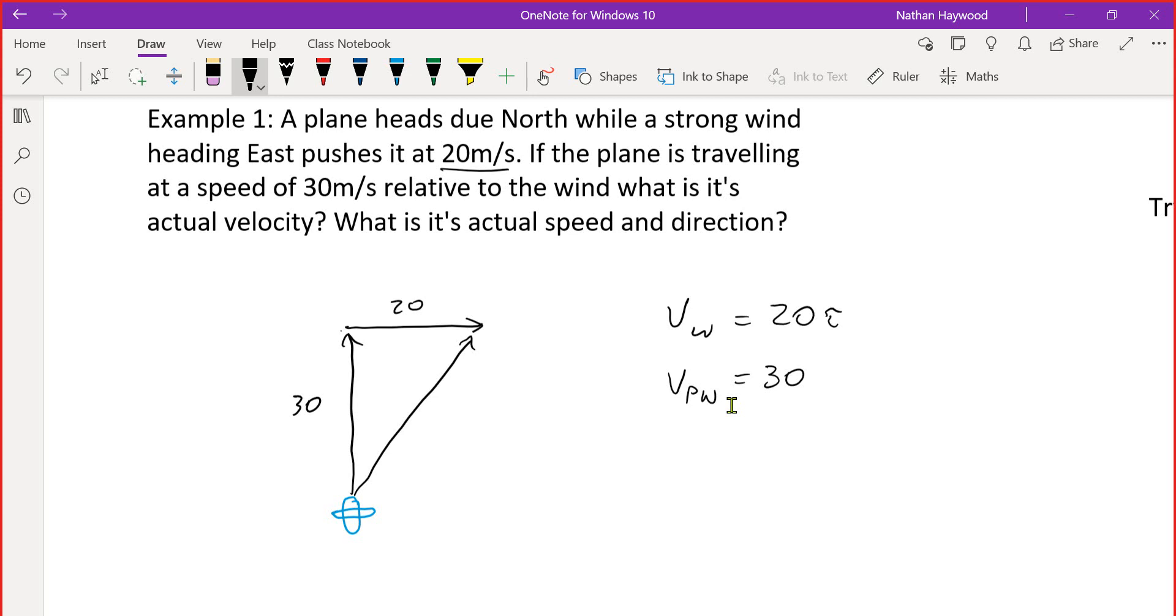What is its actual... So we're trying to figure out what the actual plane speed... Sorry, the actual velocity is. So we've got positive J, positive I. Is that making sense so far?